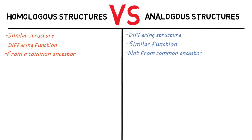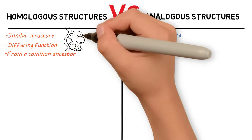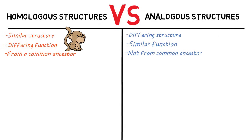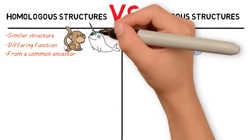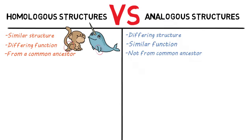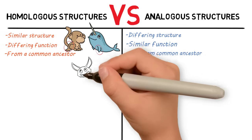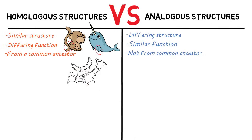Let's look at some examples of homologous structures. The arm of a monkey and the fin of a narwhal would be homologous structures, because they are a similar structure but have a differing function. Similarly, the wing of a bat and the leg of a mouse would be homologous structures.